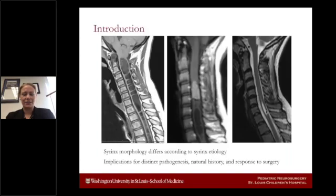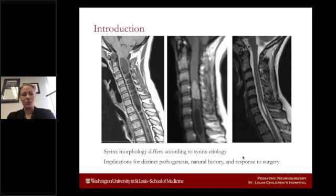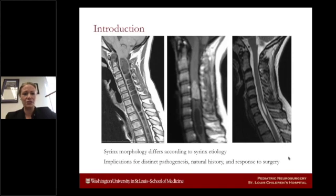As this entire group knows, all syrinxes are not created equal. The most common association for syringomyelia is Chiari. However, syrinxes can be seen with a number of different etiologies, including tumor-associated syrinx, idiopathic syrinx, and those associated with spinal dysraphism and tethered cord. Each of these distinct associations may have implications for different pathogenesis, different natural histories, and different responses to surgery.